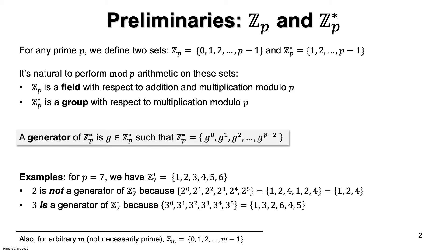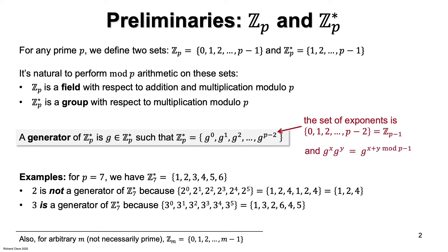We've defined the group Z*P and the notion of a generator. An additional comment concerns the set of exponents of a generator G. These exponents run from 0 to P minus 2. Note that there are only P minus 1 different exponents, because the size of Z*P is P minus 1. So the set of exponents is Z_{P-1} — please bear in mind that it's not ZP. Furthermore, if elements of Z*P are expressed as powers of some generator G, then G to the X times G to the Y equals G to the X plus Y, where X plus Y is modulo P minus 1. In other words, multiplication mod P in the group is the same as addition mod P minus 1 in the exponents.